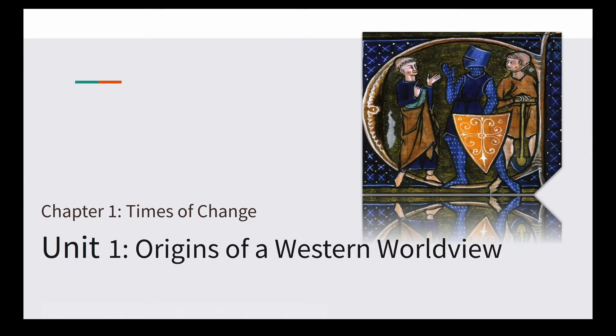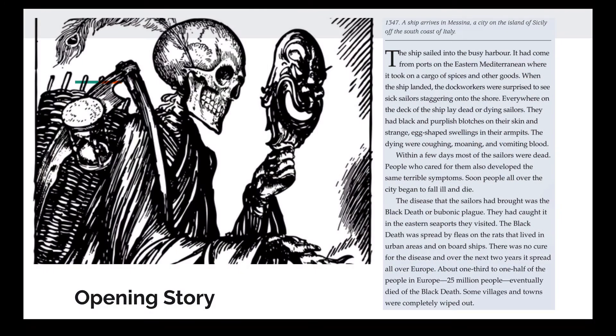Lesson 1.1 of Unit 1: Origins of a Western World View. This is chapter 1: Times of Change. We're going to start with our opening story. I want you to imagine the year is 1347 — a long time ago. A ship arrives in Messina, which is a city on the island of Sicily off the south coast of Italy.